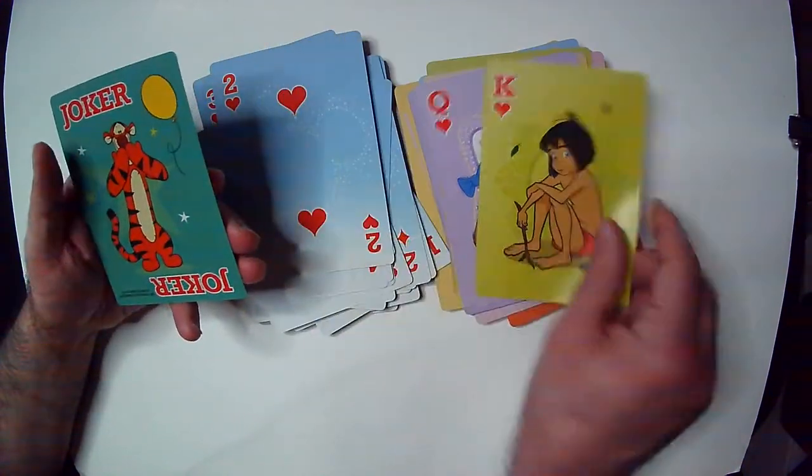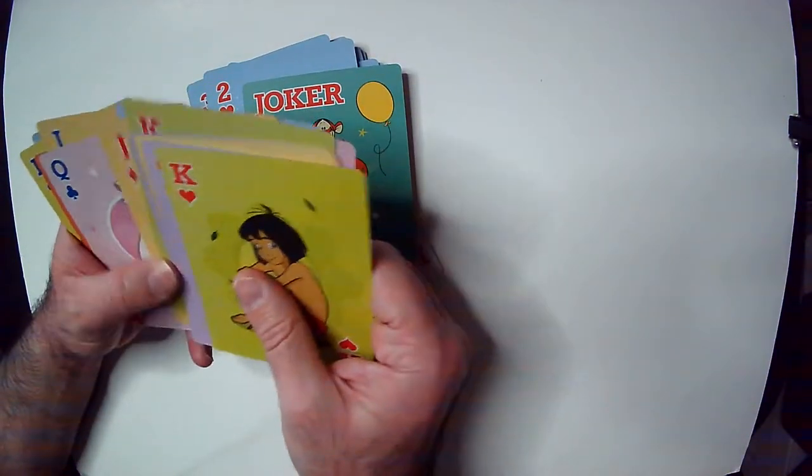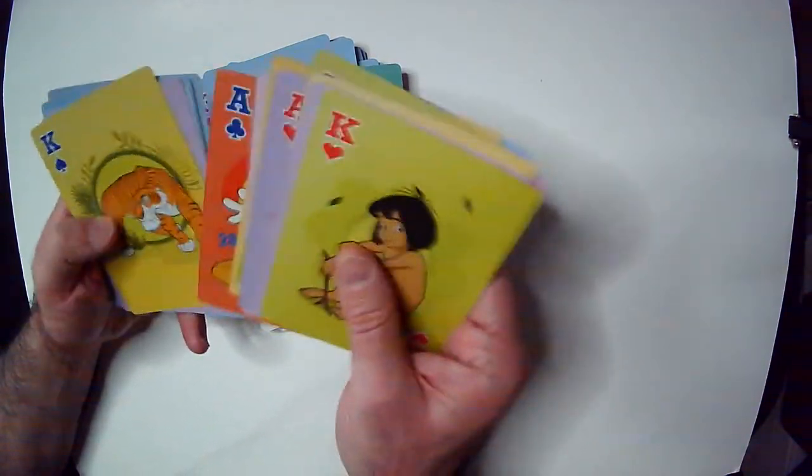All right, we have a Pooh, cat, Ogly. So what makes this worth it to me is they put a Shere Khan card in here.